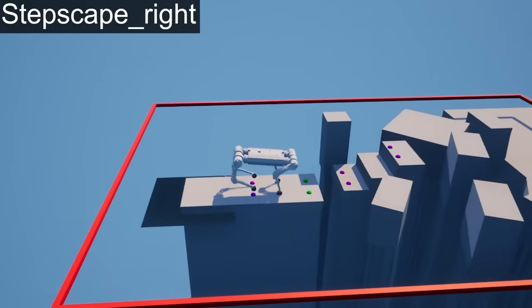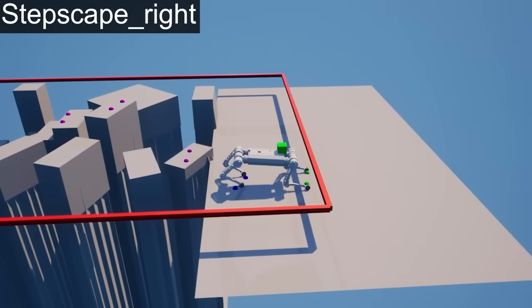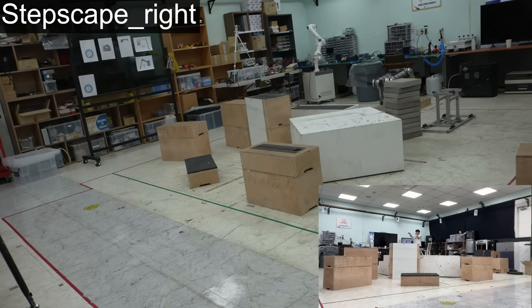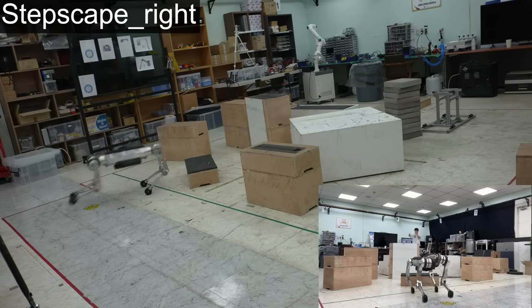The following video demonstrates the performance of the entire pipeline in a complex environment. The scenario involves a map with stairs and various obstacles, where the goal is positioned on the right.